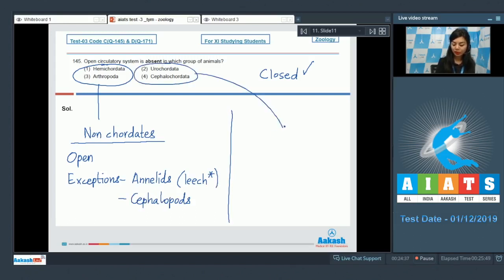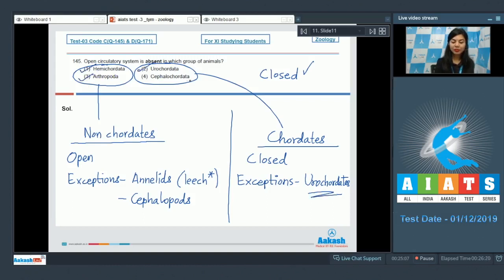Option number 2 and 4 are chordates. And in chordates, we have generally closed circulatory system, but then there are exceptions. All urochordates have open circulatory system. Looking at the options here, hemichordates would have open circulatory system, arthropoda again open, urochordata again open here, whereas cephalochordata would have closed circulatory system. The right answer here is option number 4, cephalochordata.